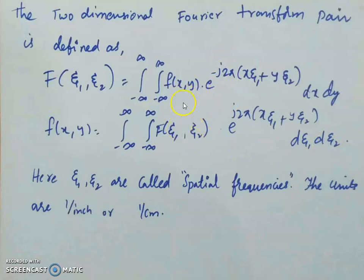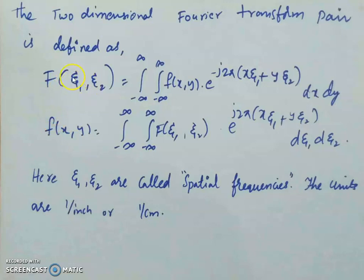These two — F(ζ₁, ζ₂) and f(x, y) — form a transform pair because it is a one-to-one mapping. The representation of f(x, y) is unique in the frequency domain: F(ζ₁, ζ₂) has only one corresponding f(x, y) in the original domain. The frequencies ζ₁ and ζ₂ here are called spatial frequencies.